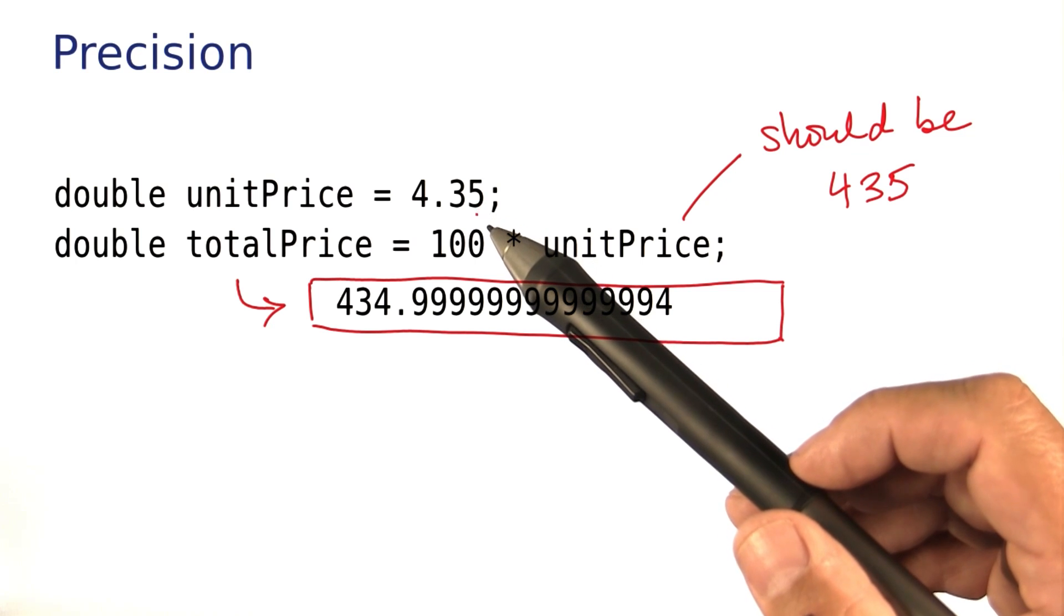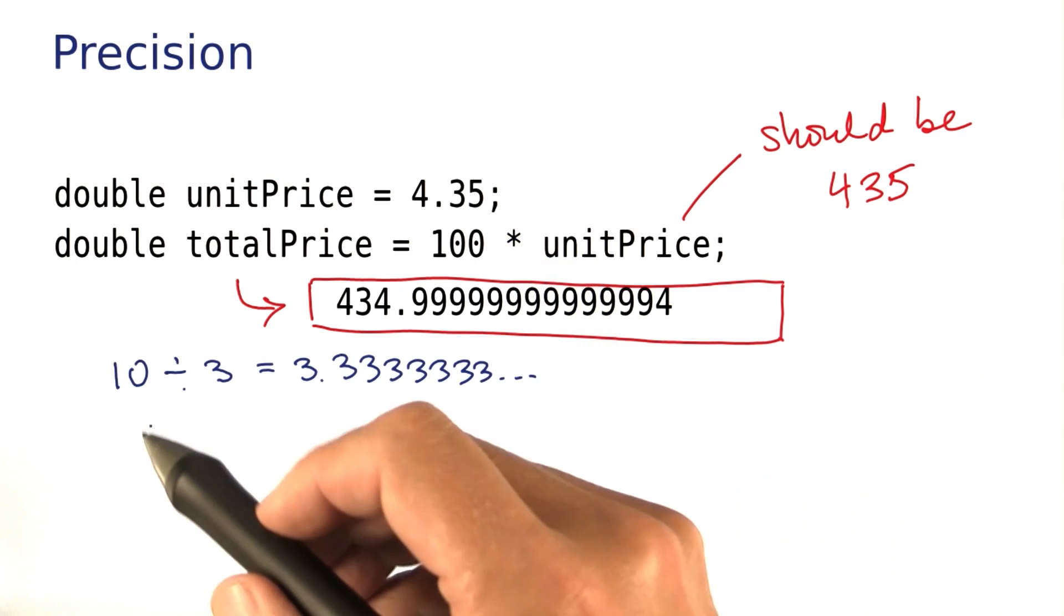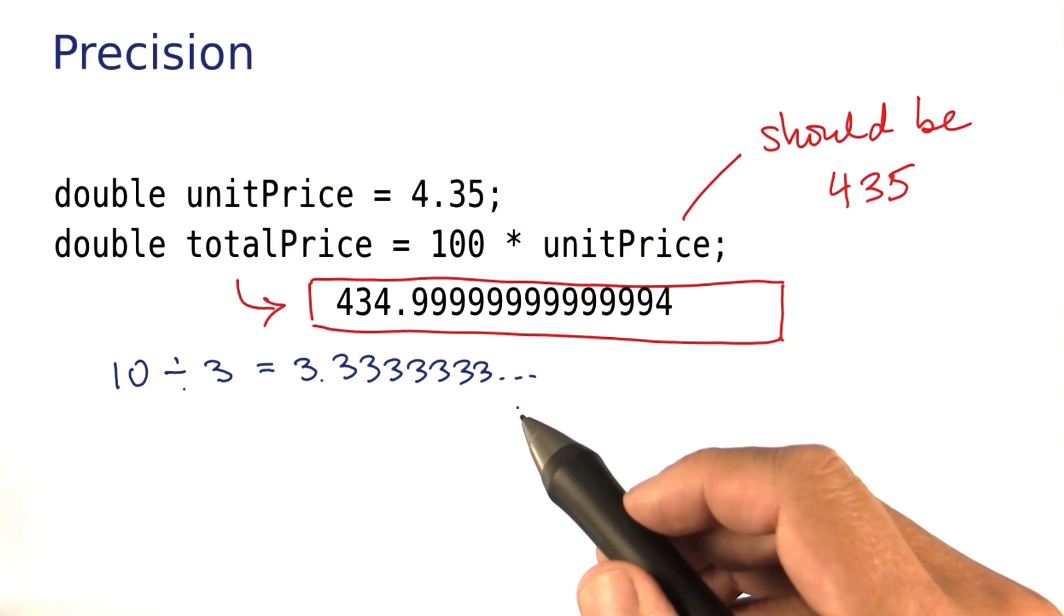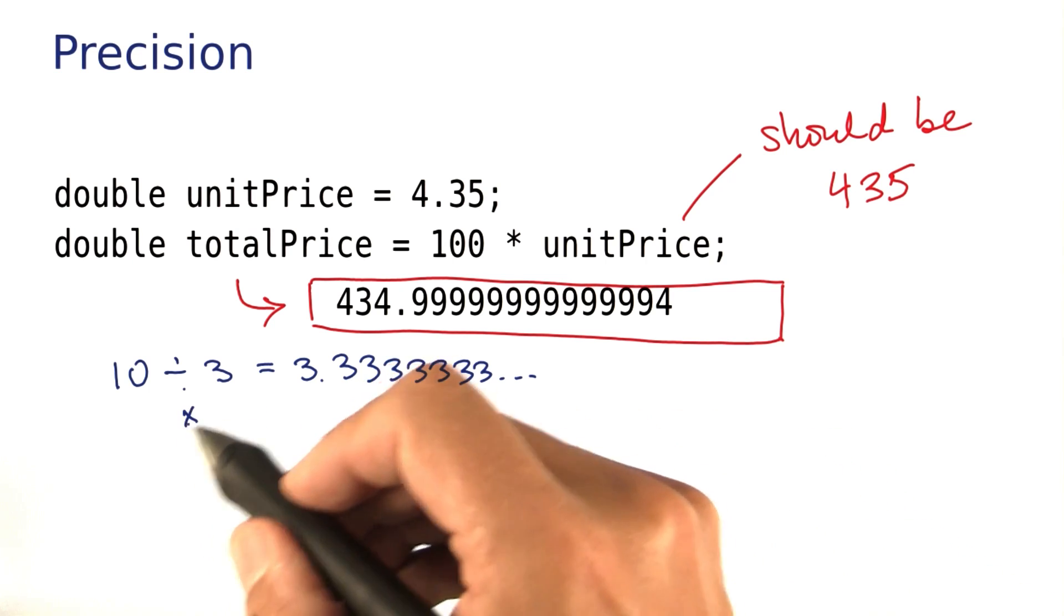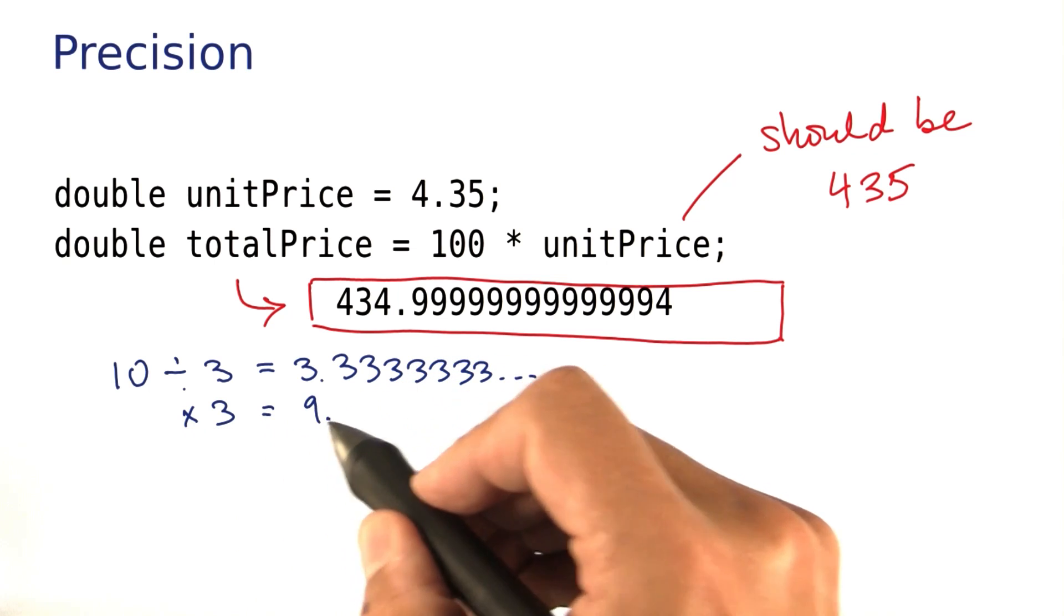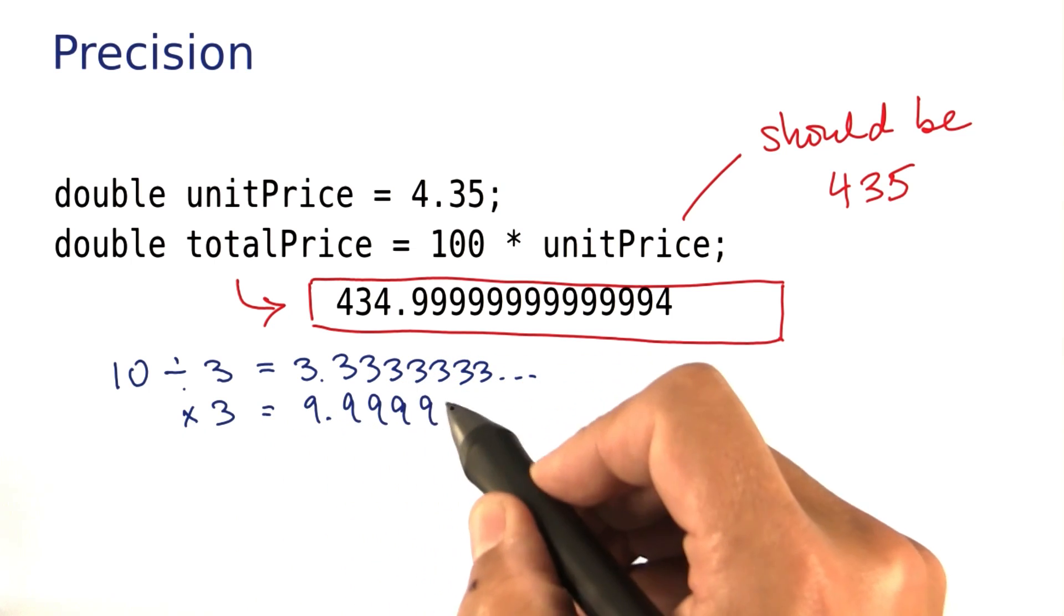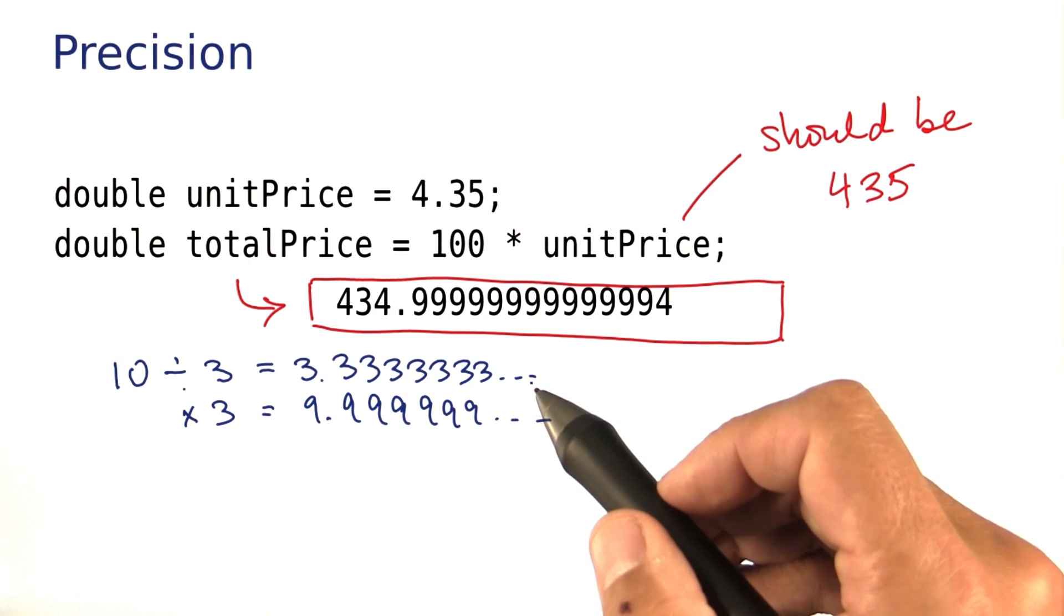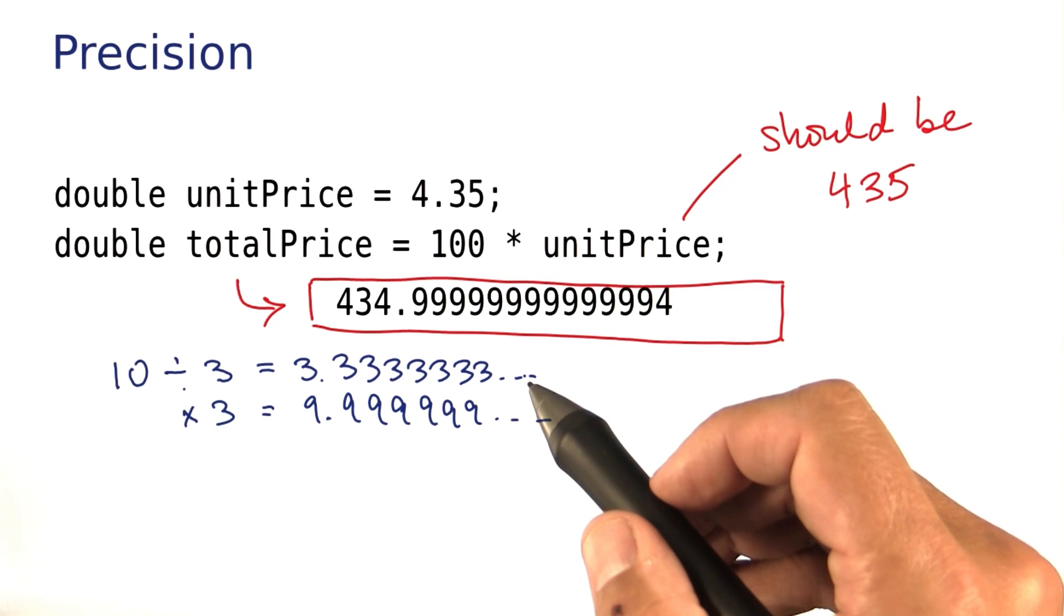It's kind of similar to your pocket calculator. When you divide 10 by 3, you get 3.3333 and so on. And then when you multiply again with 3, you would get 9.999999 and so on. The reason is that there's no exact representation for the fraction 10 over 3 in the decimal system.